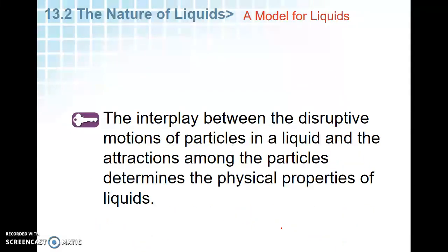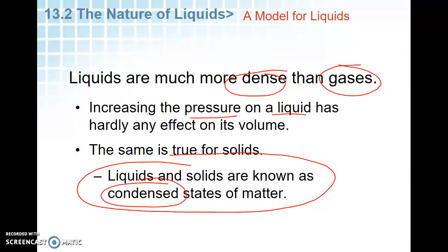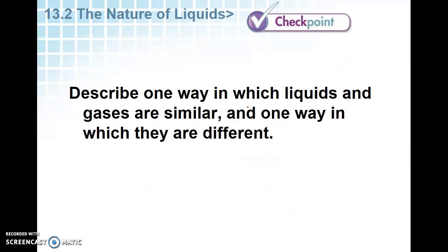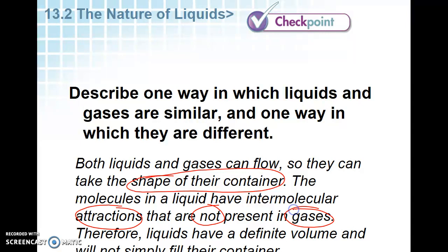Some properties of liquids: liquids are much more dense than gases. If we increase the pressure on a liquid we don't really affect its volume very much — same is true of solids. So liquids and solids are known as condensed states of matter because they're much more dense. Both liquids and gases can flow and take the shape of their container. The molecules of liquid have attractions not present in gases, which gives liquids a definite volume.